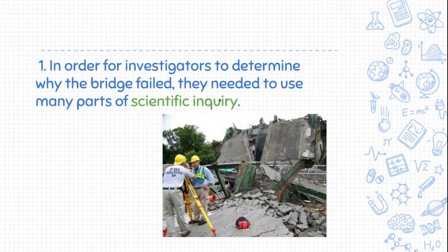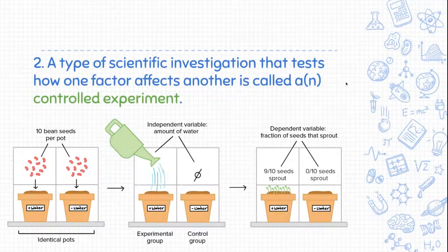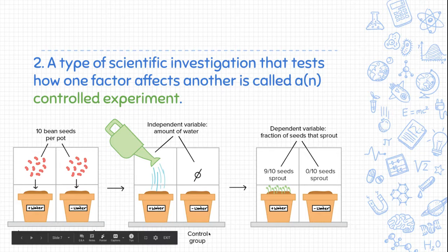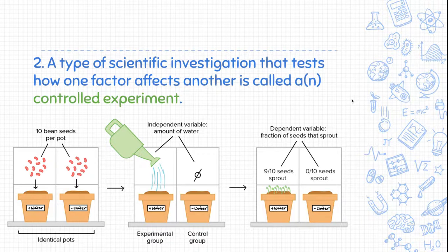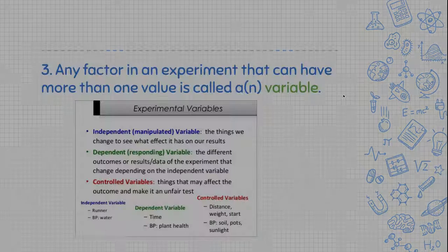Just to refresh our memory: any series of skills or steps we use to answer a question is scientific inquiry, which we covered in our last test. A type of scientific investigation that tests how one factor affects another is called a controlled experiment. We talked about the controlled group, the experimental group, the independent variable, and the dependent variable. Anytime we do an experiment, we use a controlled experiment and have all those factors accounted for.